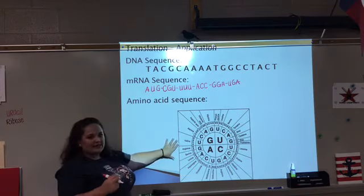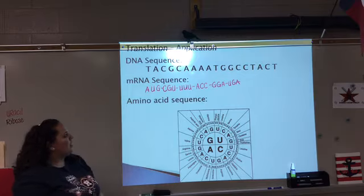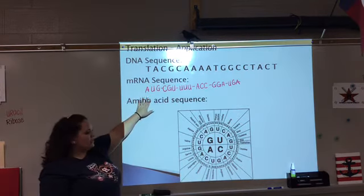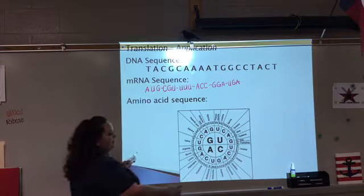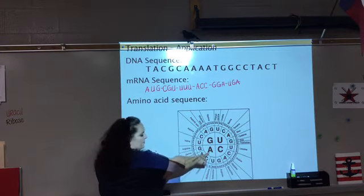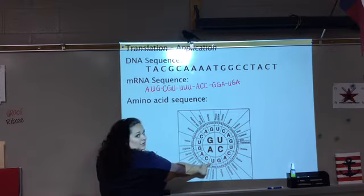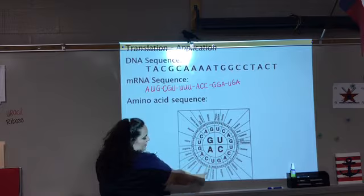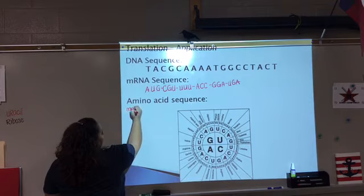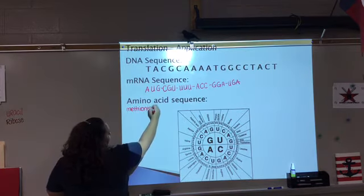Now we have our secret magic decoder wheel of amino acids. We're going to look at our codons. Our first codon is AUG. Start by putting your finger in the middle of the circle, go to the big A, then out to our second letter U, then out to our third letter G. It tells us that codes for the amino acid methionine. Remember, that is also our universal start codon.